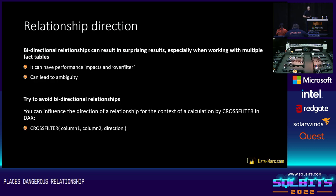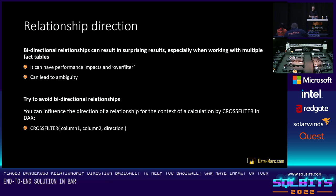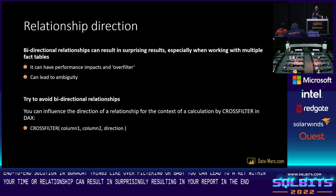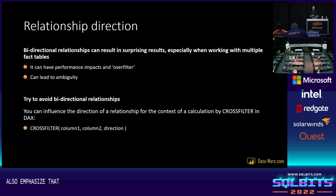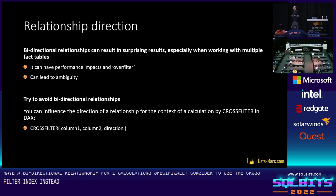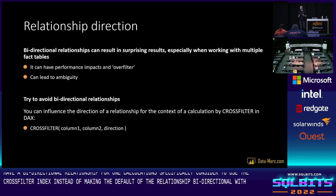The relationship direction can have a significant impact on your end-to-end Power BI solution. Things like over-filtering or ambiguity in your data model can lead to surprisingly unexpected results in your report. Try to avoid bi-directional relationships as much as possible. If you need a bi-directional relationship for one specific calculation, consider using the CROSSFILTER function in DAX instead of making the default relationship bi-directional — that way you only change direction for that one calculation without impacting the rest of your data model.